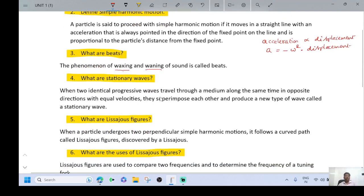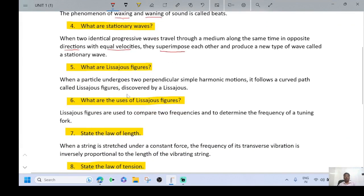See the fourth question: What are stationary waves? When two identical progressive waves travel through a medium along the same time in opposite directions with equal velocities, they superimpose each other and produce a new type of wave called a stationary wave.